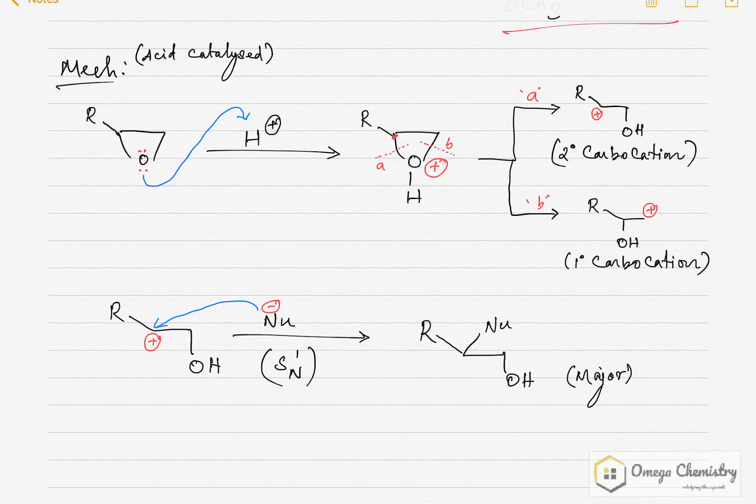I am going to call this carbon oxygen bond, that is this carbon, as A type, A type ring opening. Whereas if this carbon oxygen bond breaks, I am going to call it as B type. This is to examine what kind of intermediate can result due to this bond breakage.